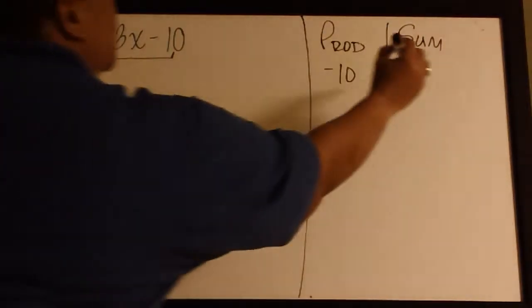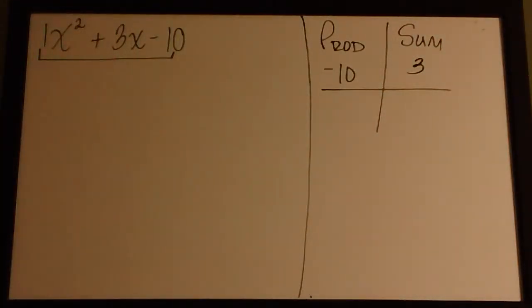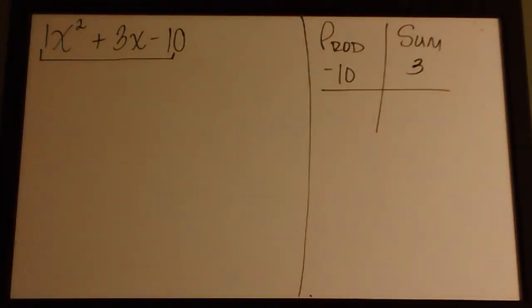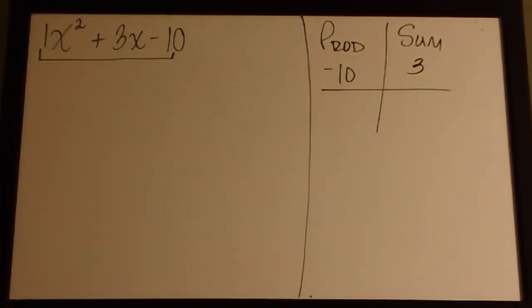The middle term gives you the sum. So we need two numbers that when we multiply them we get negative 10, but when we add them we get positive 3.